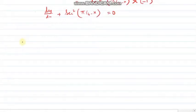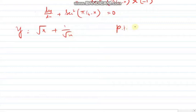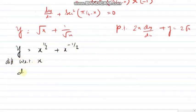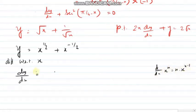Next sum: suppose y equals (√x + 1) divided by √x, and we have to prove 2x dy/dx + y = 2√x. First line: y = x to the power half plus x to the power minus half. Now differentiate with respect to x. The formula d/dx of x^n is n times x to the power n minus 1.